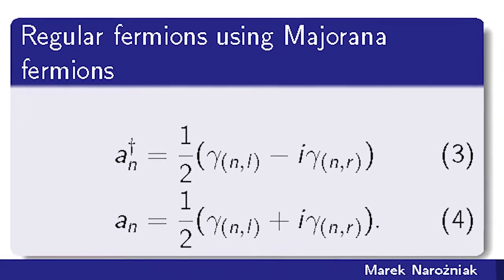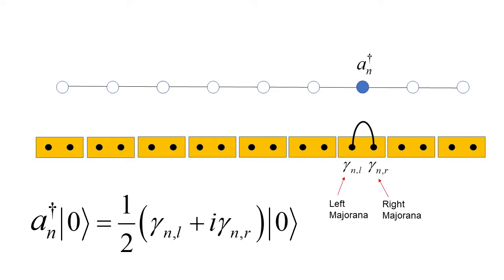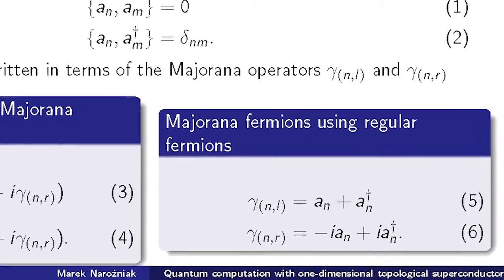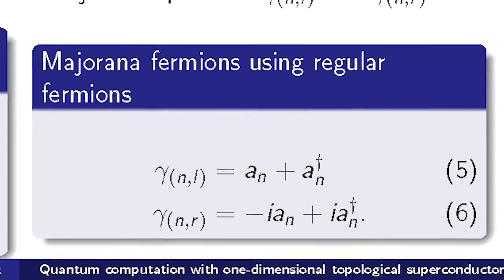So every fermion operator has just one index and every Majorana operator has two indices. One of them is also the index of the lattice site. And another one is what we call species, which could be either left or right. And also the other way around, every Majorana operator can be expressed using fermion operators. So those pictures are equivalent.